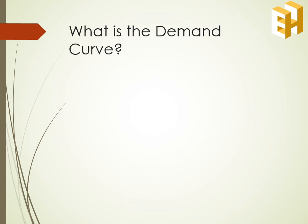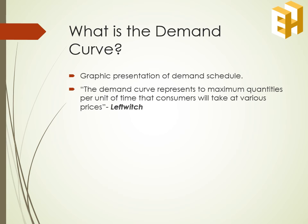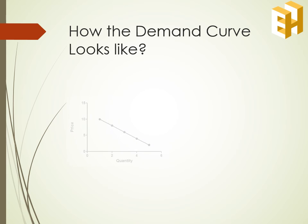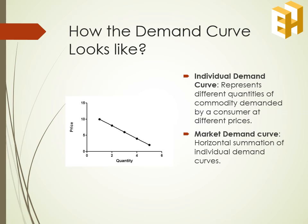Now, once we have studied about the demand schedule, it's time to understand the demand curve. The demand curve, in simple words, is the graphic presentation of the demand schedule. It represents the maximum quantity per unit of time that consumers will take at various prices. The demand curve looks like a downward sloping line with quantity on the x-axis and price on the y-axis. Like demand schedule, demand curve is also of two types: first, the individual demand curve, which shows the quantities demanded by a single consumer at different prices; second, the market demand curve, which is the horizontal summation of individual demand curves.